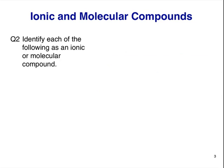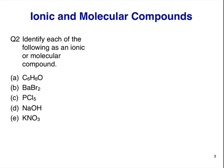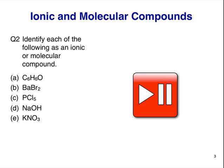Question 2. Identify each of the following as an ionic or molecular compound. C6H6O, BaBr2, PCl5, NaOH, KNO3. Pause here and think about your answers.